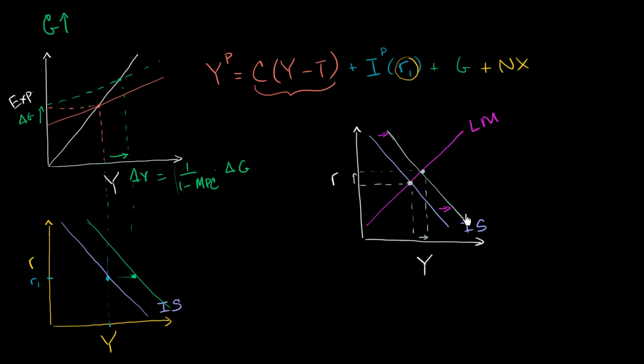You might ask: does an increase in government spending affect the LM curve? Does a change in fiscal policy affect the LM curve? Remember, the LM curve is driven by people's liquidity preferences at different levels of GDP — how much they want to hold money — and by the money supply and general price levels. That's not really impacted by government spending. Fiscal policy by itself won't change the LM curve; monetary policy or changes in liquidity preferences could.